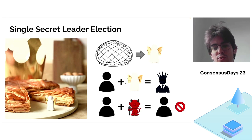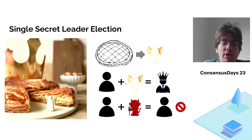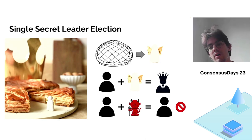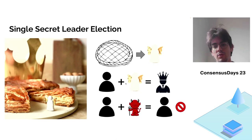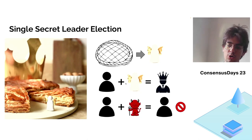Of course, if you do not find the proof or you try to fake the proof, the other people around the table will not acknowledge you as the king. So here we have all the ingredients for what an SSLE protocol is: we have the requirement of electing a leader, the identity of the leader remains secret until they're ready to reveal themselves, and we have a verification protocol that allows you to crown the correct leader but reject fake leaders.